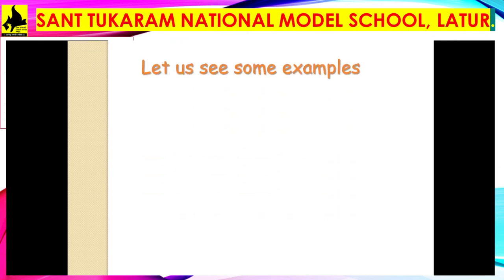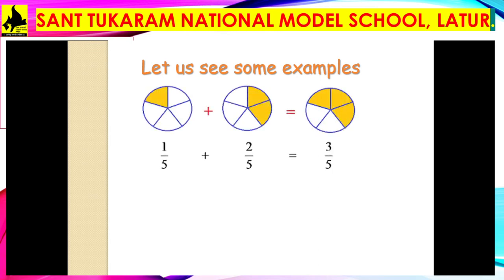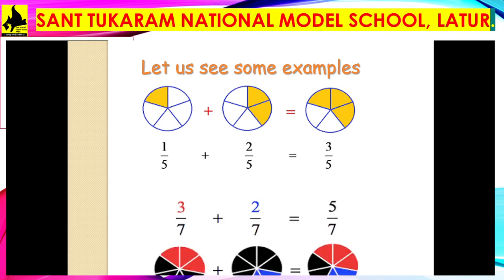We will see some examples of addition. First example: 1/5 + 2/5 = 3/5. Here we have added only the numerators, not the denominators. The two fractions, 1/5 and 2/5, are like fractions. One more example: 3/7 + 2/7 = 5/7. Do not add the denominators. Only check that the denominators are equal, then add the numerators.